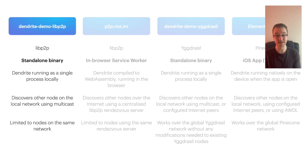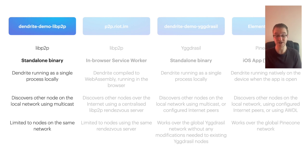The first demo we built for FOSDEM last year was the Dendrite demo libP2P binary. It supports local discovery of peers on the same network, and servers are identified by their public key. You can publish rooms into a directory which can be discovered by nearby users, and join those rooms and chat as normal. However, the demo is very limited — it doesn't work over the internet or even outside of a single subnet, and it doesn't have any glue like a DHT to actually help discover other nodes elsewhere in the world.